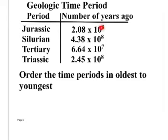So now that I've eliminated Tertiary as my oldest, then I look. 2.08, 4.38, or 2.45? Which one is the bigger number? Silurian at 4.38. So Silurian's our oldest.